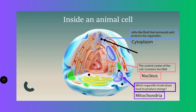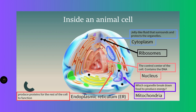The next organelles are these black dots inside the cell called ribosomes. Ribosomes' function is connected with proteins. Around the nucleus, these structures are called the endoplasmic reticulum. The endoplasmic reticulum's function is connected with the production of proteins and some other functions.